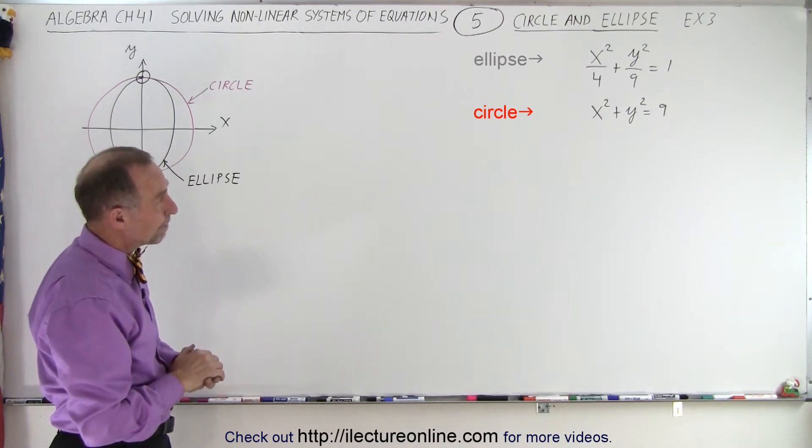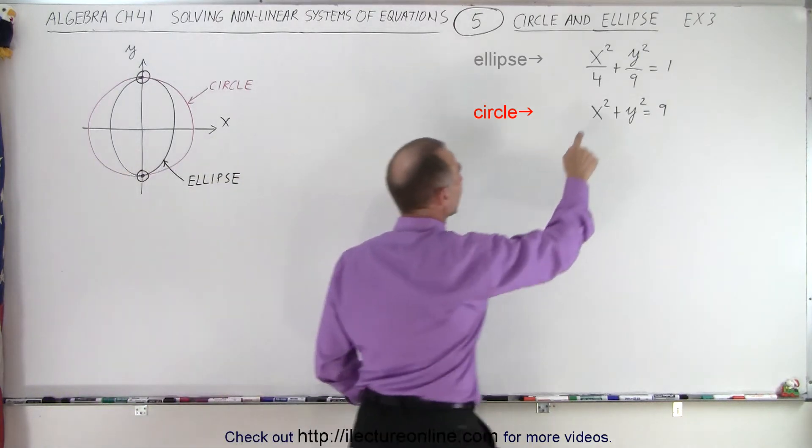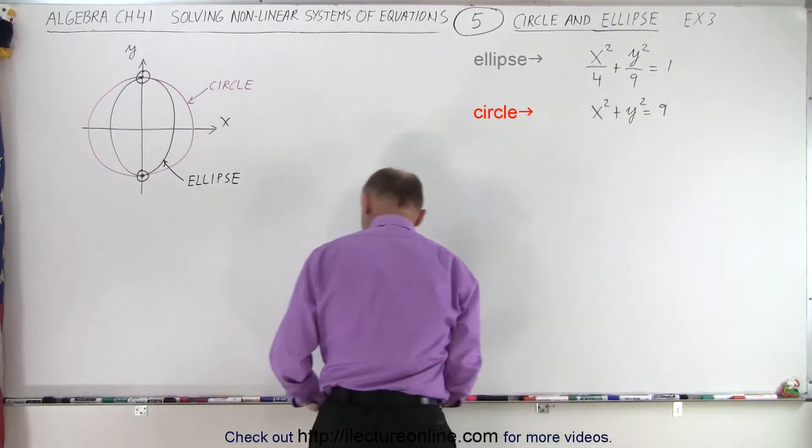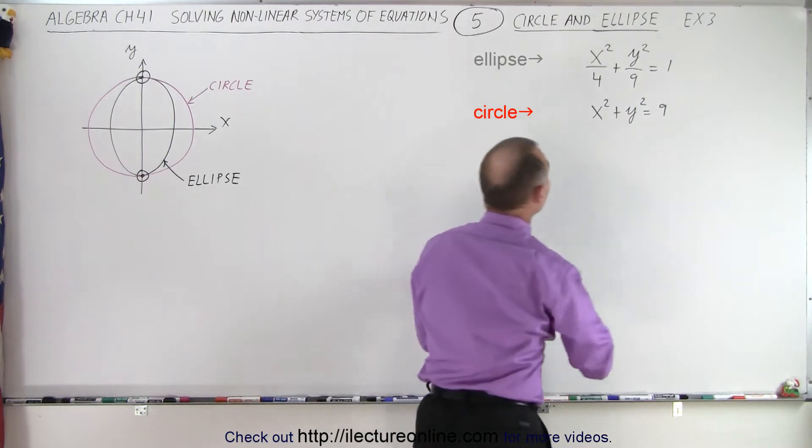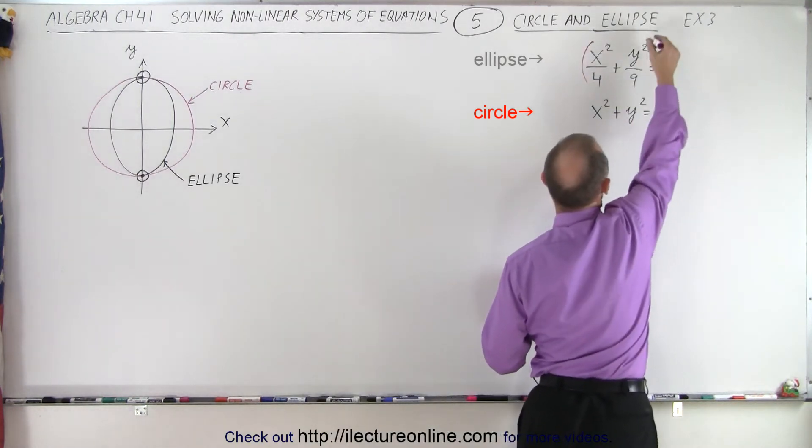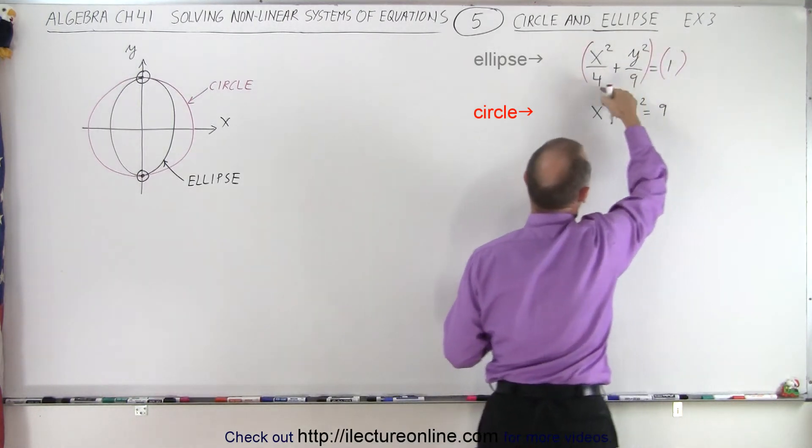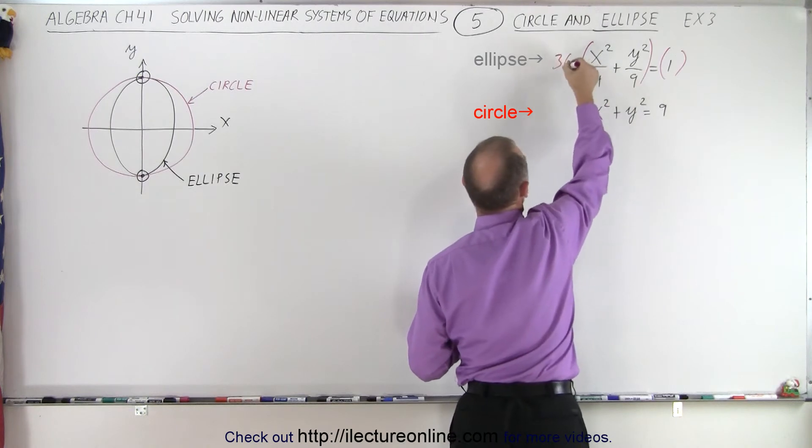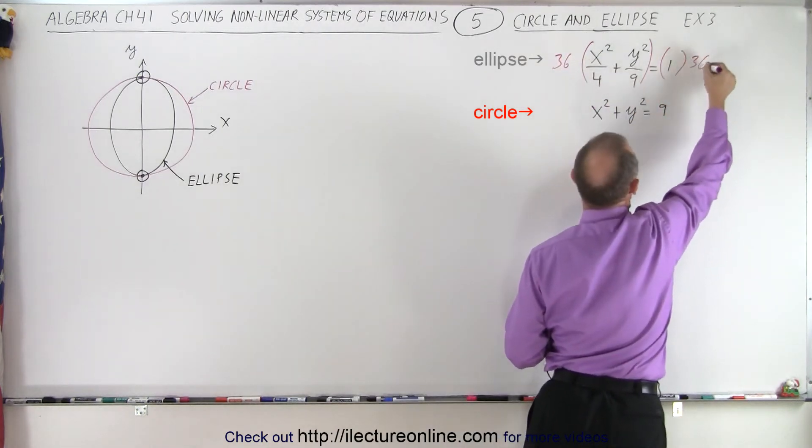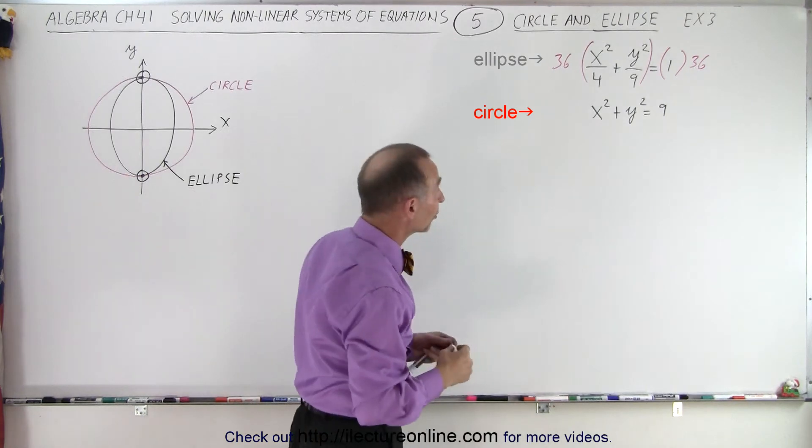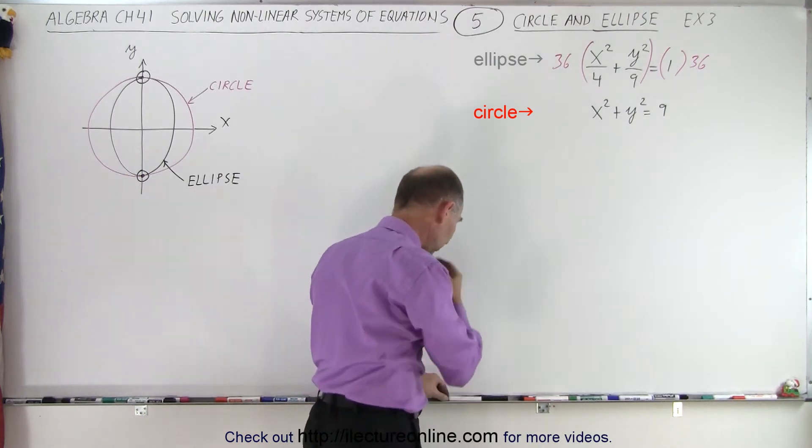Well, let's see. I think what we want to do first here is get rid of the denominators, which means we're going to multiply the left and the right side by the lowest common denominator, which in this case is the product, which is 36. So multiply both sides by 36.